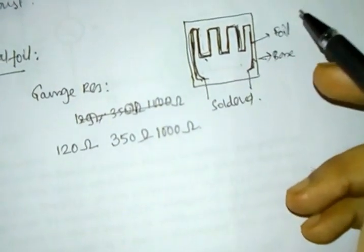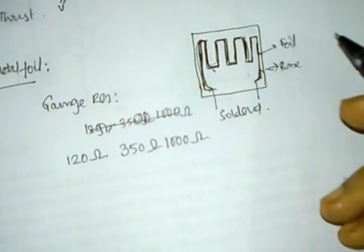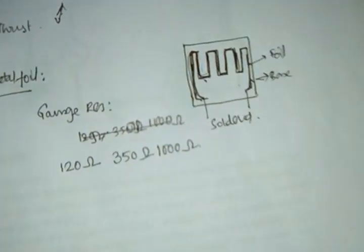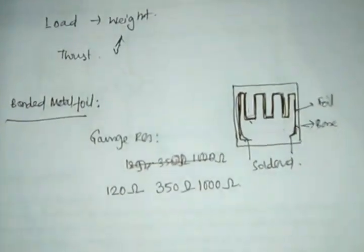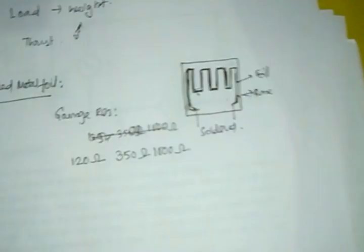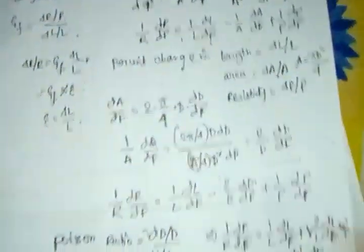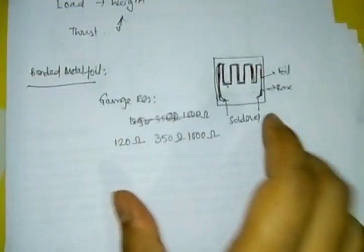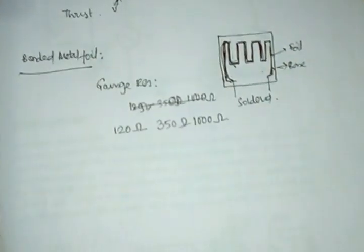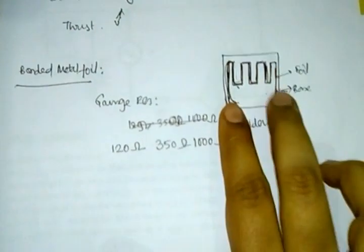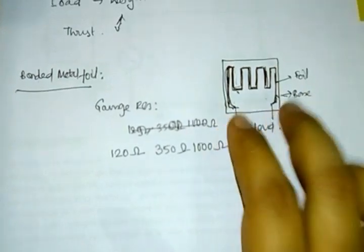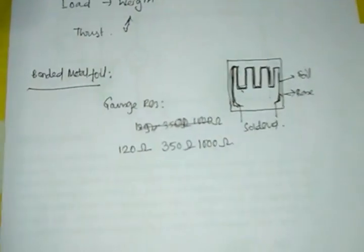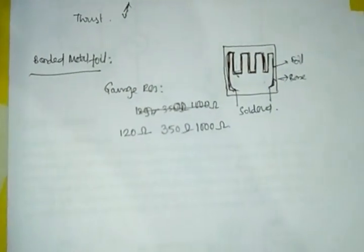The gauge resistance of a typical bonded type is 120 ohm, 350 ohm, and 1000 ohm. If you apply thrust here the resistance will differ, and from that difference in resistance we can calculate the amount of strain which has been applied. That is the basic principle of a strain gauge. I hope you have enjoyed this — thank you.